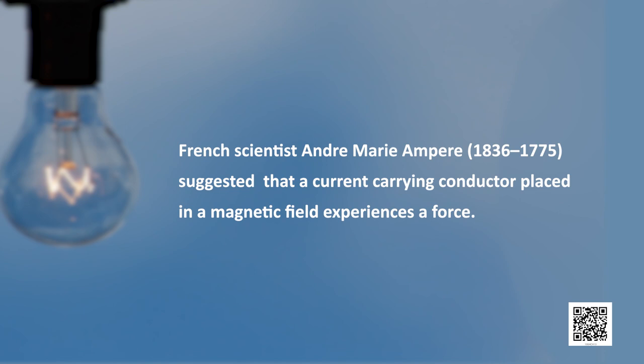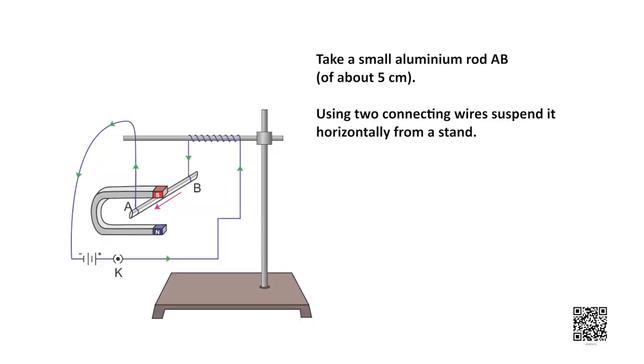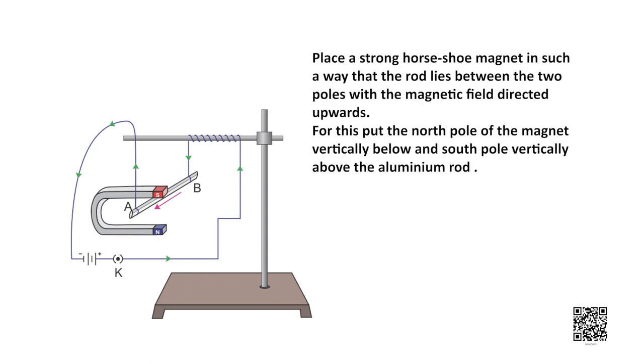French scientist Andre Marie Ampere suggested that a current carrying conductor placed in a magnetic field experiences a force. This can be demonstrated by an activity: take a small aluminium rod of about 5 centimetres length and suspend it horizontally from a stand using connecting wires. Place a strong horseshoe magnet such that the rod lies between the two poles with the magnetic field directed upwards, putting the north pole below and the south pole vertically above the aluminium rod.